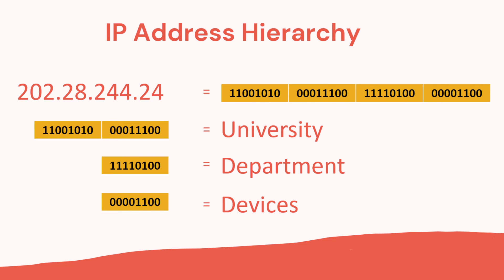Now if you think of your address backwards, you would start off with the country you live in, then your postcode, your area such as your state, province, or county, then your city, maybe the area you live in, then your road. So we can think of this as a hierarchy. We can do the same with the IP address — the first bits could represent the country and location, the next the company, maybe different departments inside that, and at the end the devices in the departments. So we have this hierarchy.